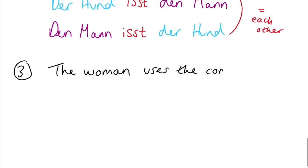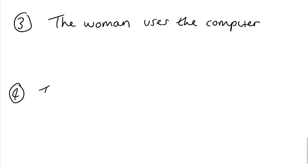Let's have another go. The woman uses the computer. The woman is the subject. And the computer is the object. In sentence three. In sentence four, we've changed it around. The computer is the subject. And the woman is the object.